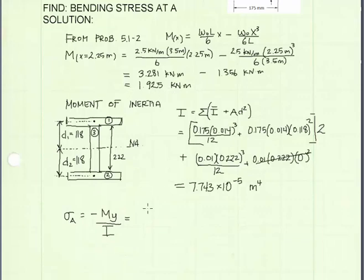Now the moment we calculated above, the value of the moment is 1.925 kilonewton meters. This variable y is the distance from the neutral axis up to the point we're evaluating stress. And we're evaluating stress here at point A.